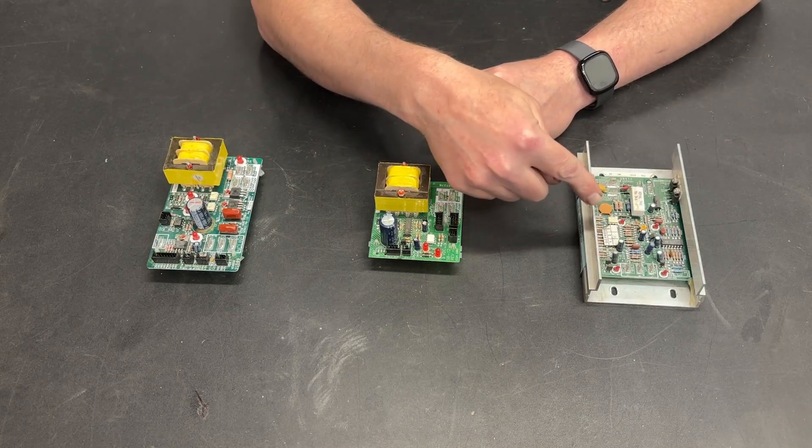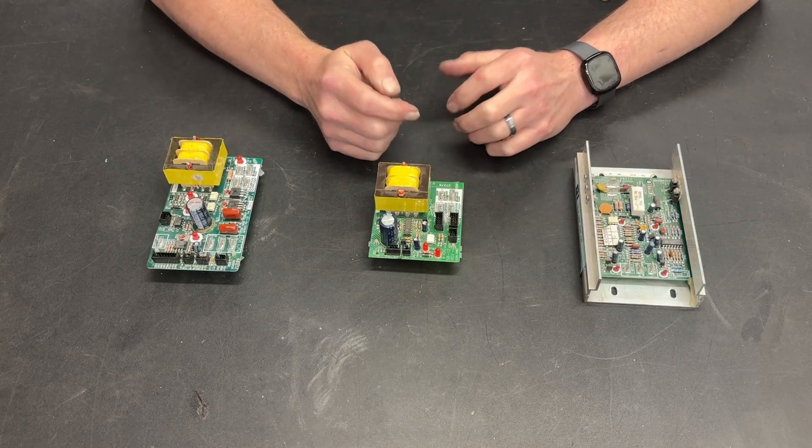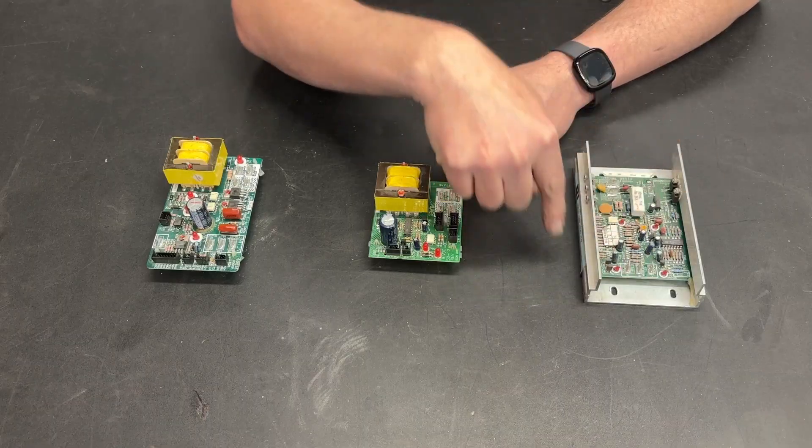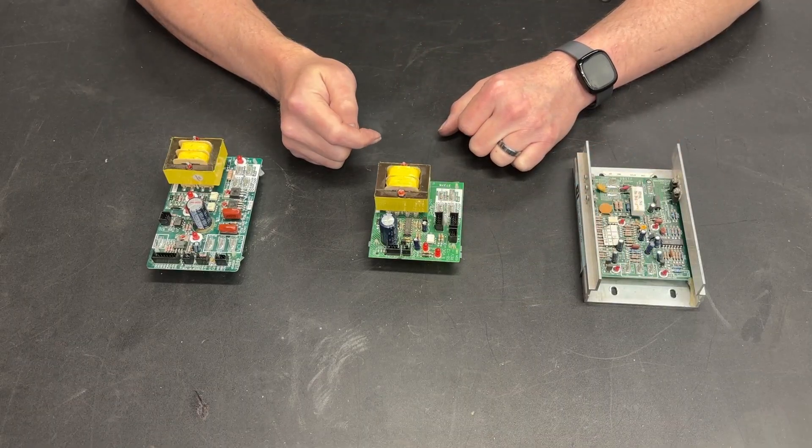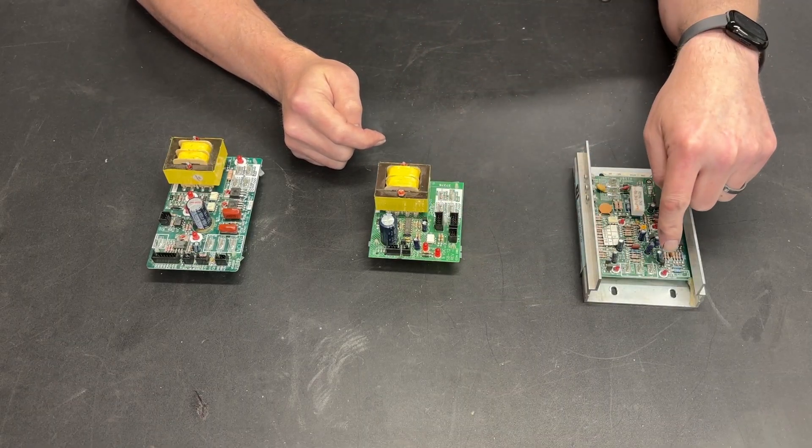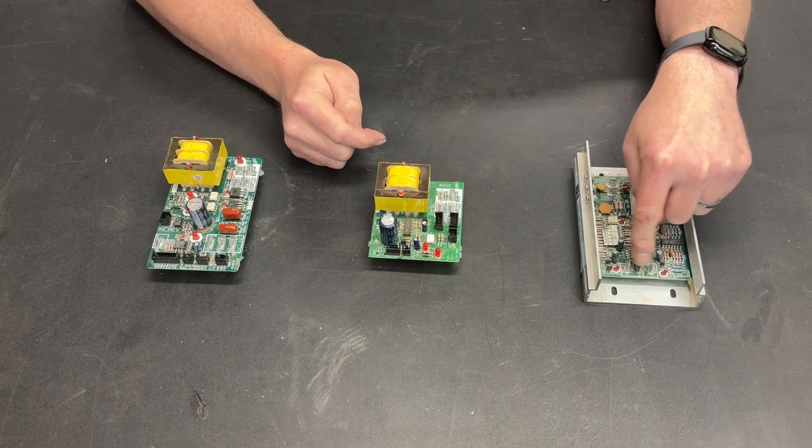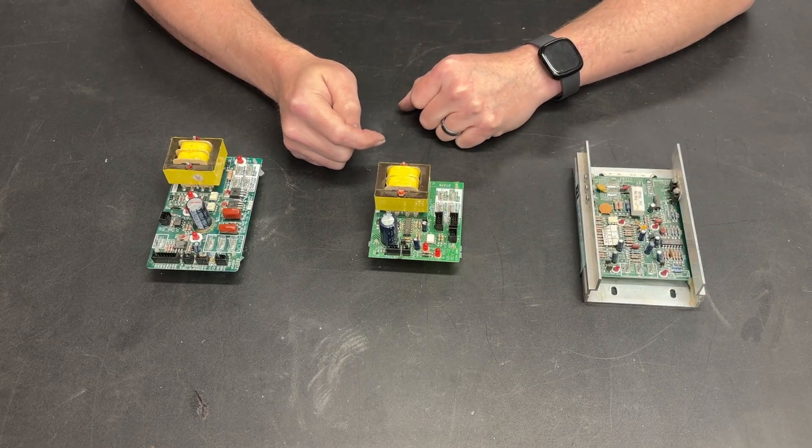So you've opened up a treadmill that you're scrapping and inside is an MC60, and you're elated because this is the easiest treadmill motor controller to hack. You simply hook a potentiometer up to these three terminals right here and away you go.